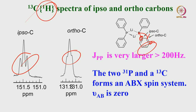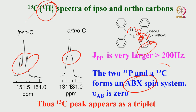There are two carbons close in shift: the ipso carbon directly bonded to phosphorus and the ortho carbon. Each appears as a triplet. The JPP coupling is very large — about 200 Hz — forming an AABX spin system where we observe the X part. As a consequence, each carbon appears as a triplet. With proton decoupling active, we see only phosphorus-carbon coupling and potentially lithium-carbon coupling.